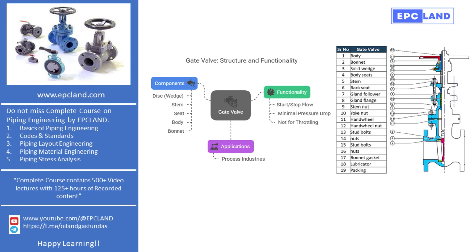These components work together to make gate valves simple, reliable, and very effective for on-off control in pipelines. In summary, gate valves are used to start or stop flow, not to control it. They offer very low resistance when fully open, are not suitable for throttling or flow regulation, and are common in almost every type of industrial plant.